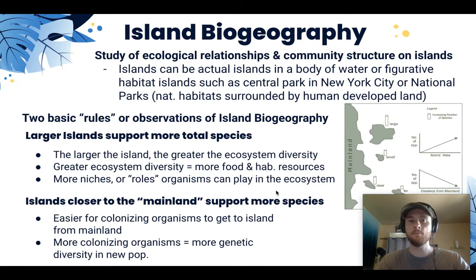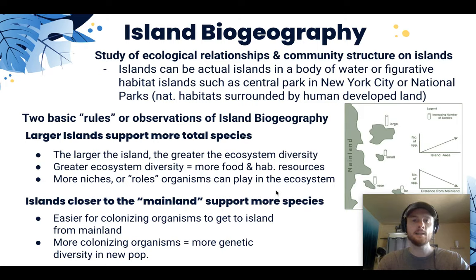We have a graphic here to help us visualize this. At the top, we have a large island and a small island that are equal distances away from the mainland, and the graph shows that the large island will have more total species — due to its diversity of habitats and food resources. In the lower half of the diagram, two islands are the same size but one is much closer to the mainland, so we'd expect that island to have higher species richness due to ease of colonization. It's much easier for organisms to spread from the mainland because they don't have to swim or fly as far.